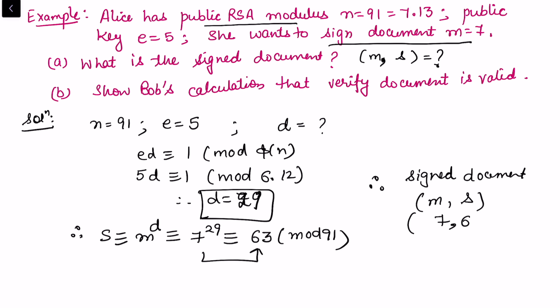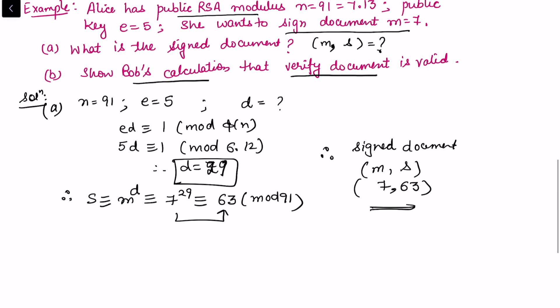Now we want to show Bob's calculation that verifies the document is valid. Bob should know that the original document was 7. For Bob, we calculate s to the power e, which is congruent to 63 to the power 5. This, when we reduce, we get it as 7 mod 91. So we can see that s to the power e should give us m, and here we got m equals 7.